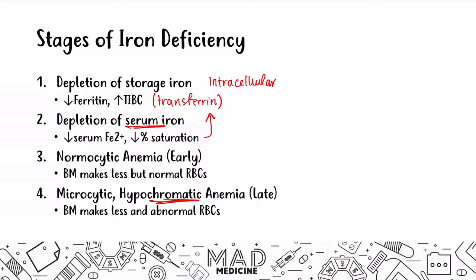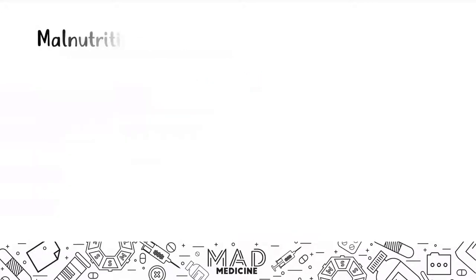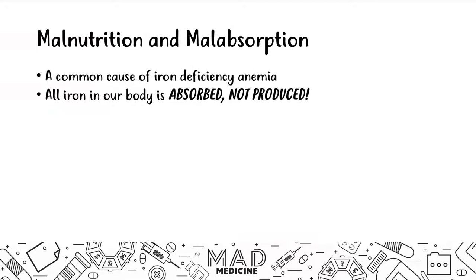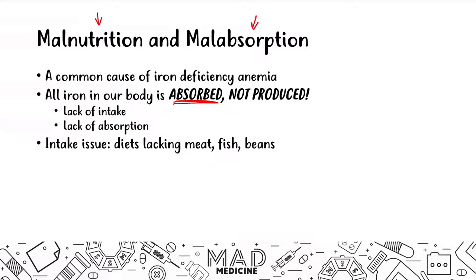What causes iron deficiency anemia? The first cause is malnourishment and malabsorption — probably the most common cause, because all the iron in our body must be absorbed. If you can't absorb iron or aren't intaking enough, you won't have proper iron stores. The main problem is either a lack of iron intake or a lack of absorption in the GI tract. An intake issue can be a diet that lacks meat, fish, or beans. Breastfeeding can also lead to slightly decreased iron storage in a child, since human milk does not have as much iron as other mammal milk.